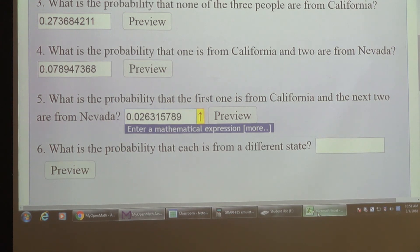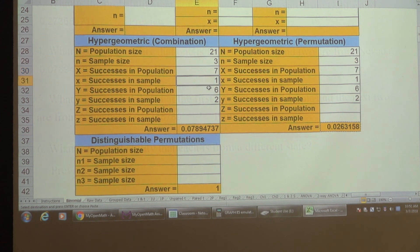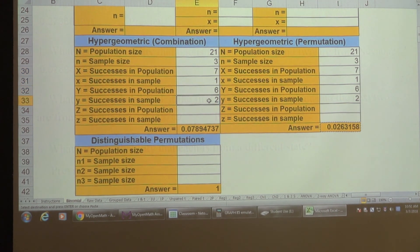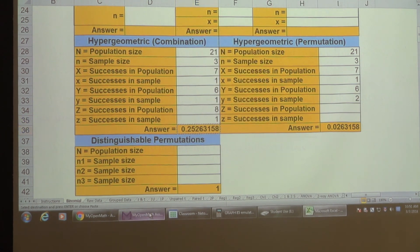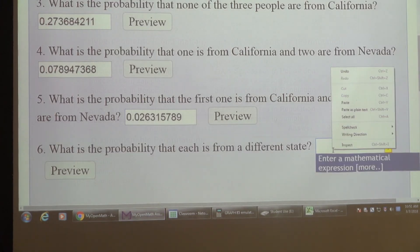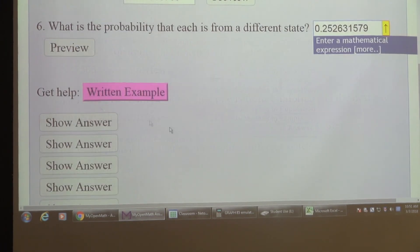Again, the order doesn't matter, so that's going to be combinations. So from the seven, I need one. From the six, I need one. And from the eight, I need one. And there's that probability. Let's get that. And we'll paste it in right here. And we'll submit it.